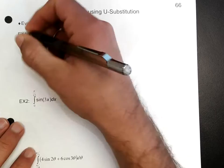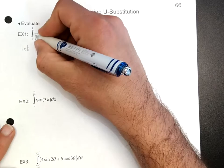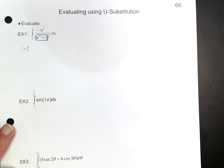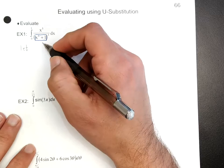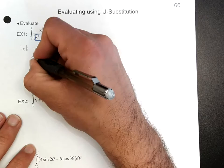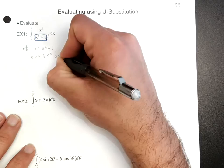If you did problem 65, you'll notice that you have this expression under the denominator. If you take the derivative of it, you would get 6x to the 5th power. Notice you have x to the 5th power up here, so we're going to let this be u — the inside of that. So we let u equal x to the 6th power plus 1. Then du equals 6x to the 5th power dx.